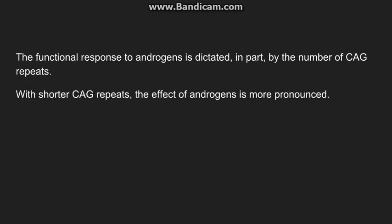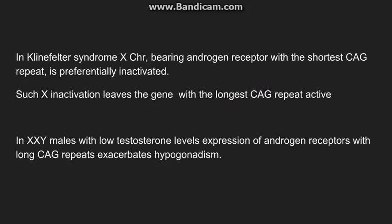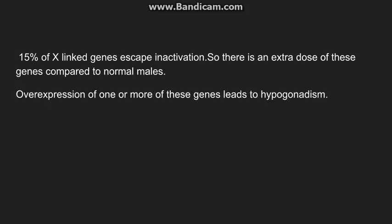In Klinefelter syndrome, the X chromosome with the shortest CAG repeat is preferentially inactivated, leaving the gene with the longest CAG repeats active. Patients with Klinefelter syndrome already have low testosterone levels, and with the longest CAG repeats in the androgen receptor, there is very low expression of testosterone effect, which exacerbates the hypogonadism. Additionally, even after X-inactivation, approximately 15% of X-linked genes do not get inactivated, so there is always an extra dose of these genes, which also contributes to hypogonadism.